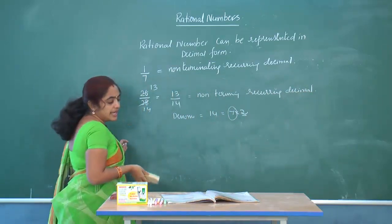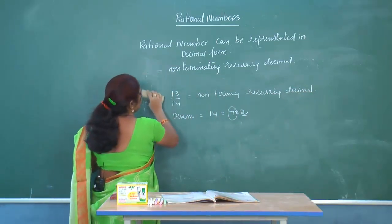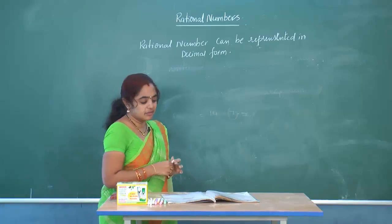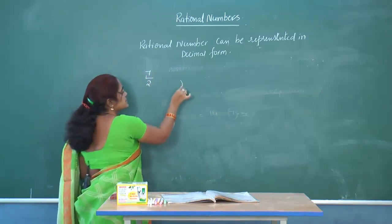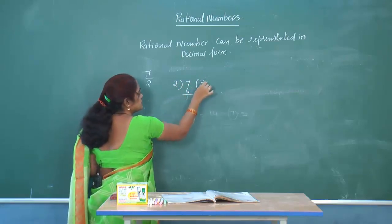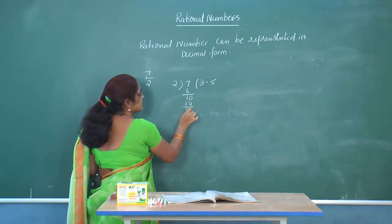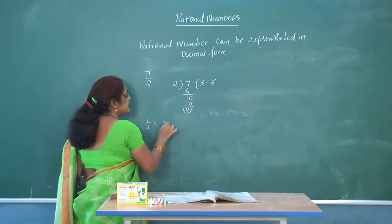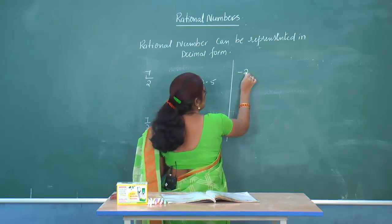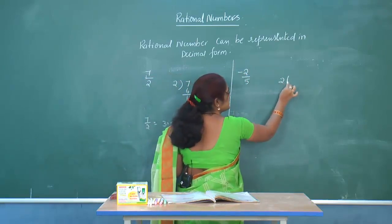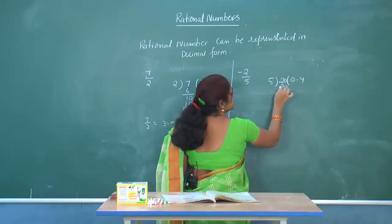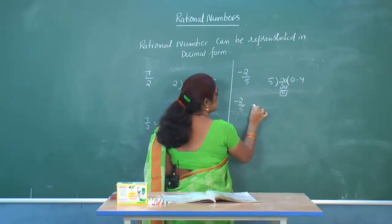Second problem: express each of the following in decimal form. To convert any rational number to decimal, divide the numerator by the denominator. For 7/2: 2 threes are 6, remainder 1; 2 fives are 10, remainder 0. So 7/2 = 3.5. For −2/5: 2 divided by 5 gives 0.4, so −2/5 = −0.4.